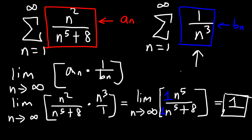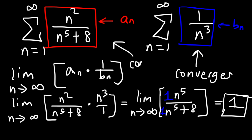Because the limit approaches a finite number, both series must converge. We know the first one converges, so by the limit comparison test, the other one must converge as well.